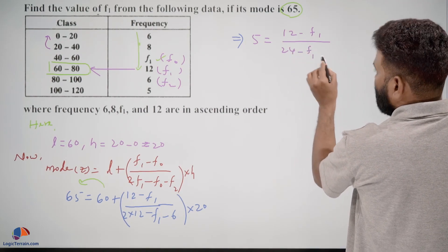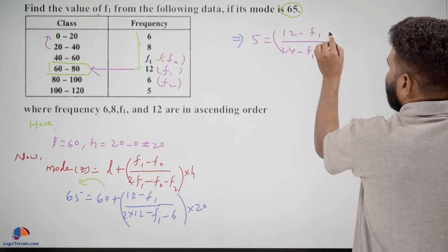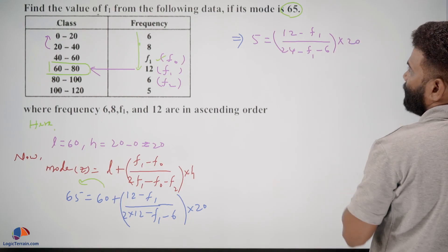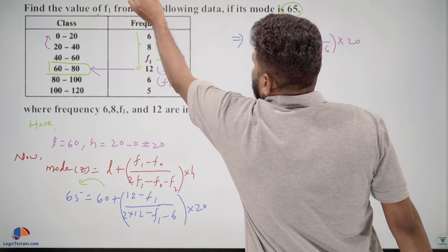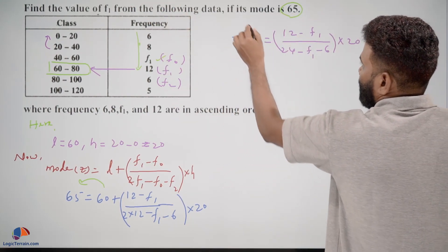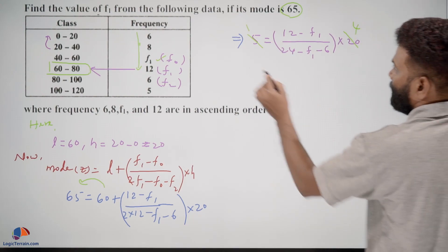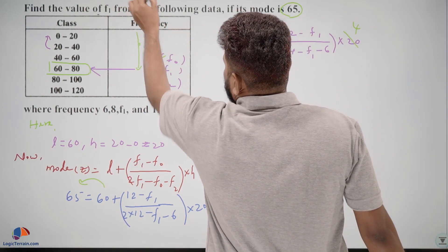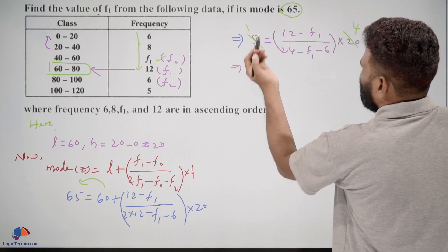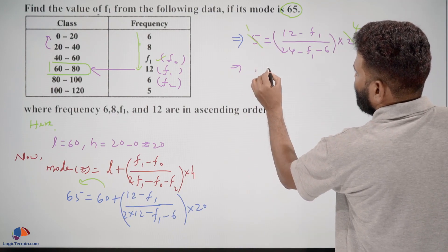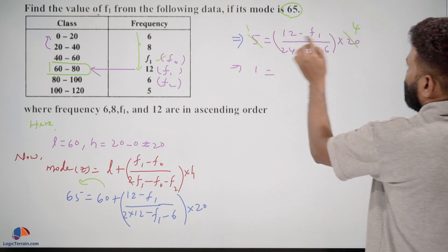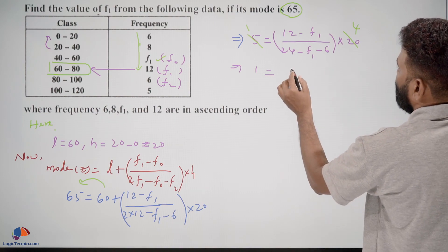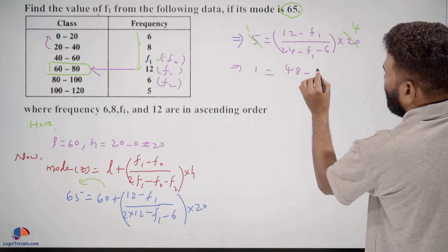Again, both sides you can divide with 5, then this becomes 1 equals 12 into 4, 48 minus 4f1 upon 24 minus 6, that is 18 minus f1.